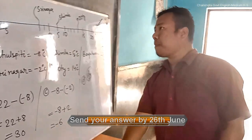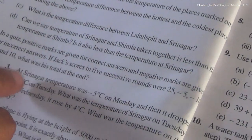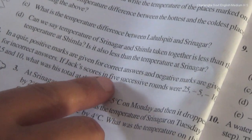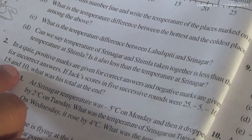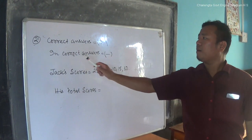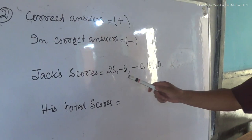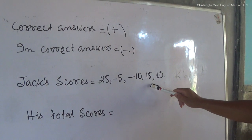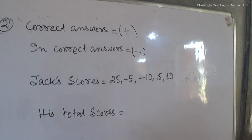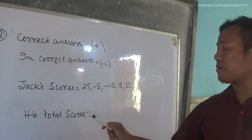Next we have question number 2. Positive marks are given for correct answers and negative marks are given for incorrect — that is wrong — answers. What was Jack's score? In the first round his score was 25, in the second round minus 5, in the third round minus 10, in the fourth round 15, and in the last round 10. We have to calculate the marks scored in the 5 successive rounds — that is his total score.